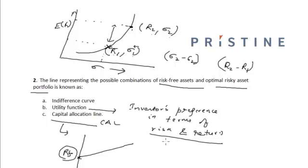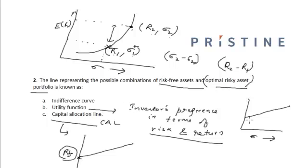As the standard deviation — or the riskiness of the portfolio — increases, or more weight is added to the optimal risky asset portfolio, the risk factor increases and the expected return also increases. So the CAL will look something like this.